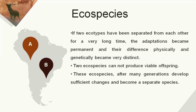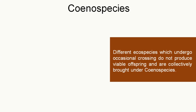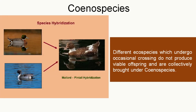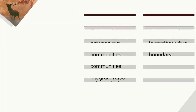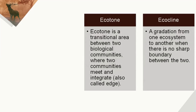These ecospecies, after many generations, develop sufficient changes and become separate species, diverging into two different species. What are coenospecies? Different ecotypes or ecospecies which undergo occasional crossing but do not produce viable offspring are collectively known as coenospecies. For example, breeding between mallard and pintail ducks results in mallard-pintail hybridization, estimated at about one in a thousand, as these two species are reproductively isolated in the wild.